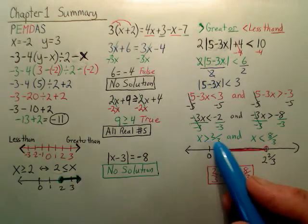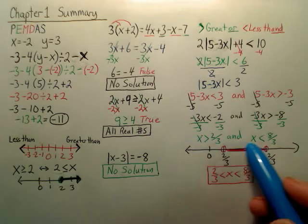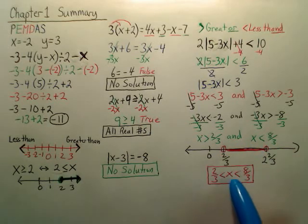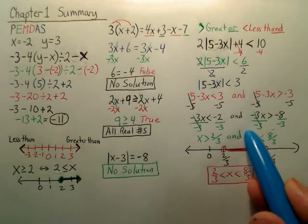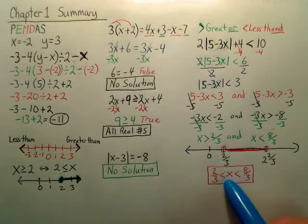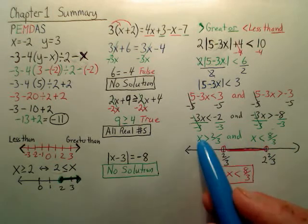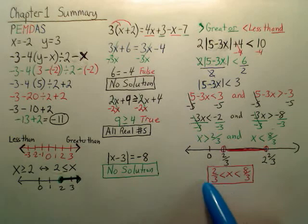Don't be the person who leaves your answer like this. It's wrong. And statements are always written like this. X between the lower and the larger number. You see right here, x is less than 8 thirds. X is less than 8 thirds. If you wrote this one backwards, it's right here.